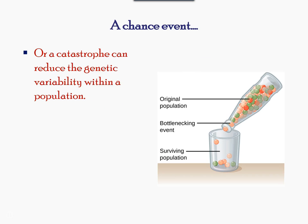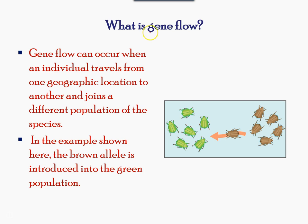Genetic drift can also be seen as a bottleneck effect. The original population may have a mixture, but survivors during a situation such as a hurricane or a lava overflow may cause a mass die-off, and only the surviving individuals repopulate. Another important force is gene flow, which results from the migration of individuals or gametes. For example, a brown bug joining a different population introduces a new trait into the green population.